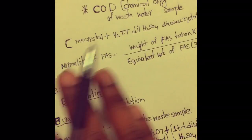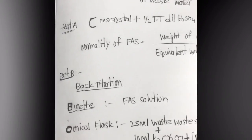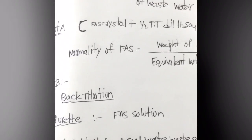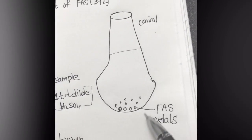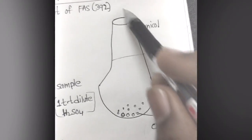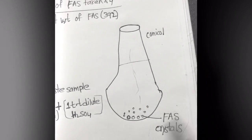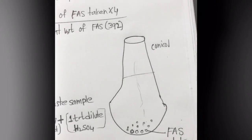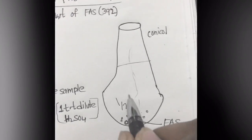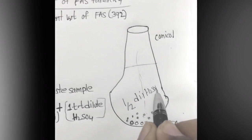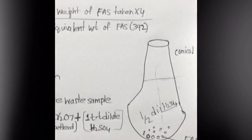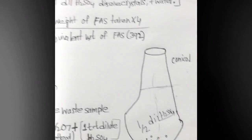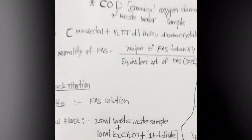First we'll see Part A — what we should fill in the burette. We'll consider this as a conical flask. Weigh out the given FAS crystals and add them into the conical flask. To dissolve the crystals, we'll add half a test tube of dilute H₂SO₄, then dilute with water up to the mark. This gives us our standard FAS solution.